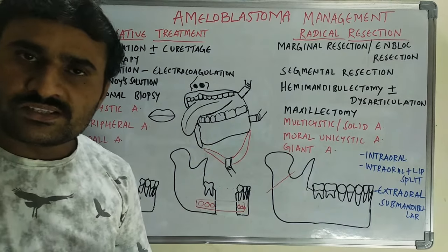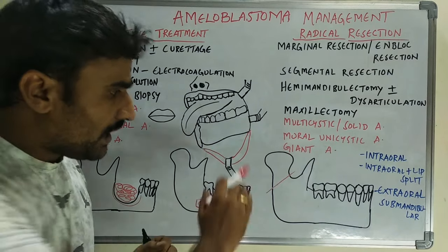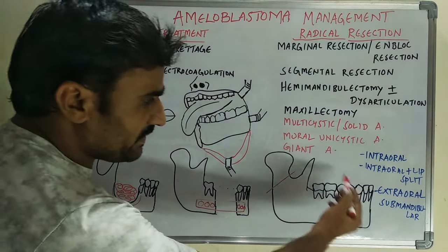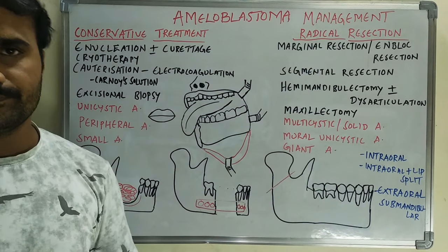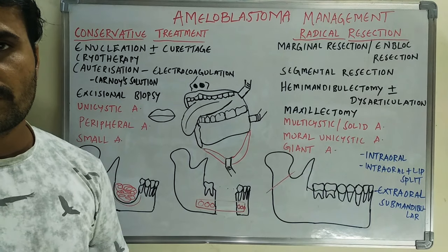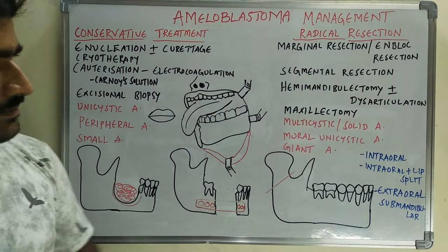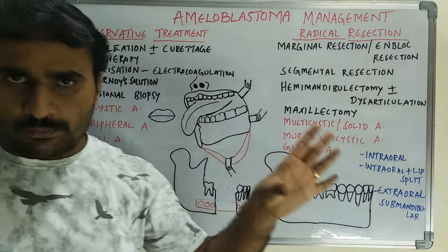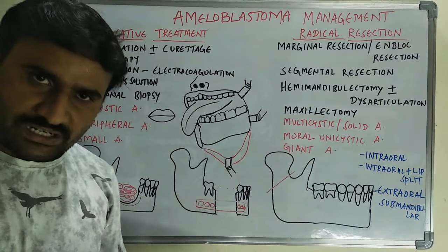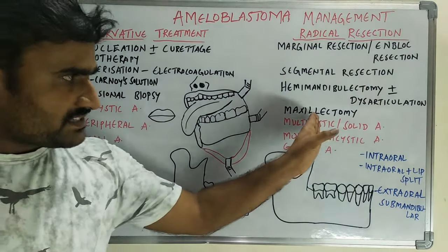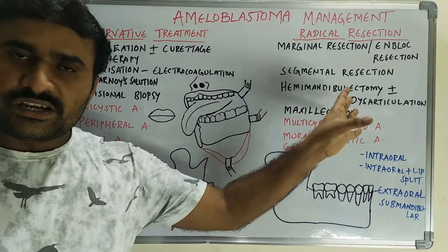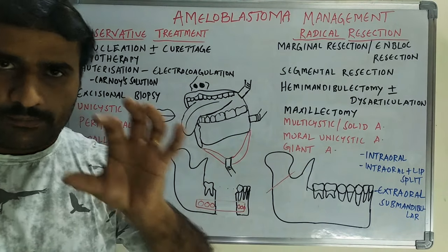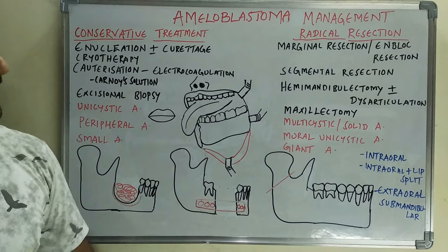With disarticulation means we remove the condyle also — the complete half side of the mandible is removed. Maxillectomy has various types which will be discussed later. Maxillectomy is indicated in cases of ameloblastoma involving the maxilla.